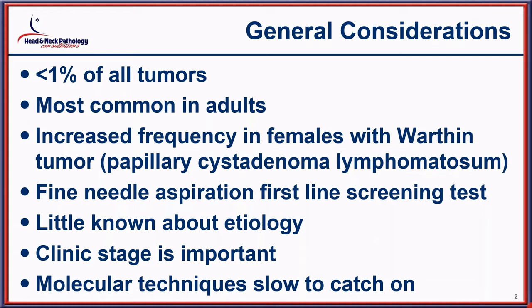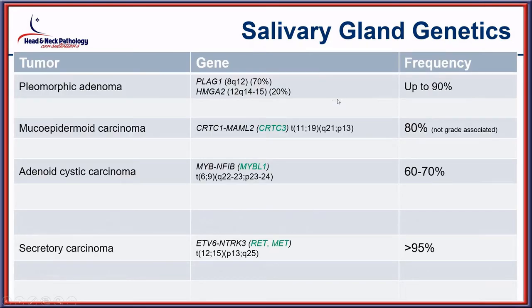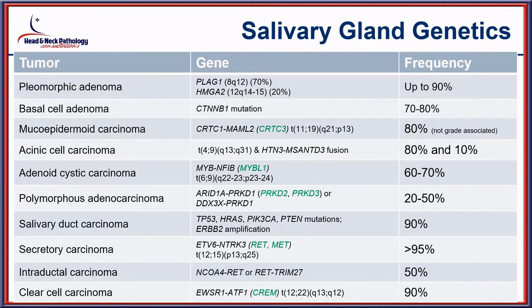Clinical stage is actually one of the most important considerations. Molecular techniques have also been employed in this arena. When I originally developed this lecture several years ago, only about three or four tumors had documented genetics or molecular findings. Now, this has been filled in nicely with multiple different components, and although I am not a molecular pathologist, many of these findings can certainly augment diagnosis and sometimes even inform treatment and long-term outcome.